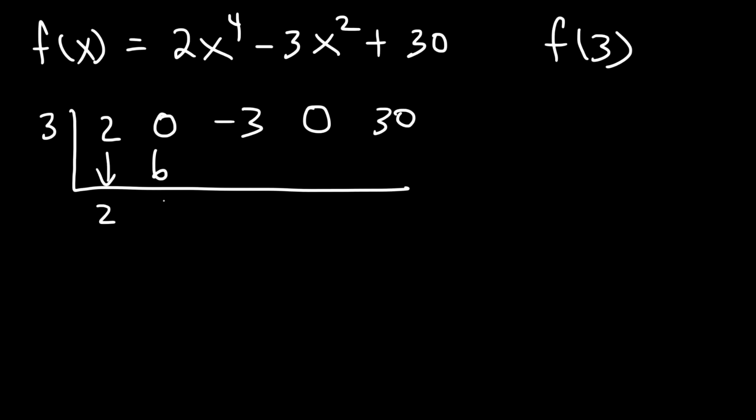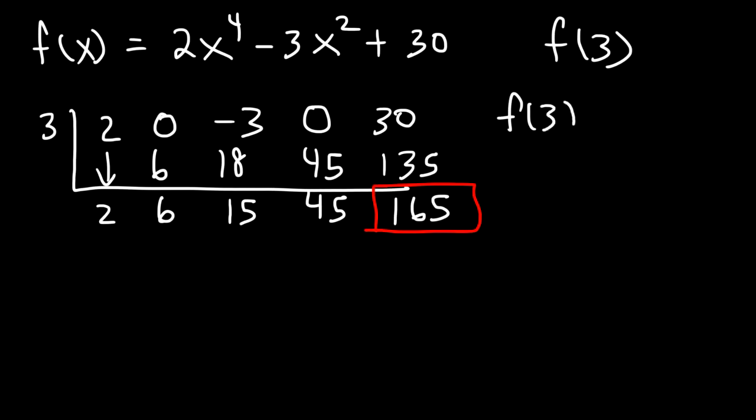3 times 2 is 6. 0 plus 6 is 6. 3 times 6 is 18. And then negative 3 plus 18. That's 15. 3 times 15 is 45. And then 3 times 45. 3 times 40 is 120. 3 times 5 is 15. So 120 plus 15. That's 135. And if you add 30 to it, that will give you 165. So therefore, f of 3 is equal to 165. That's the answer.